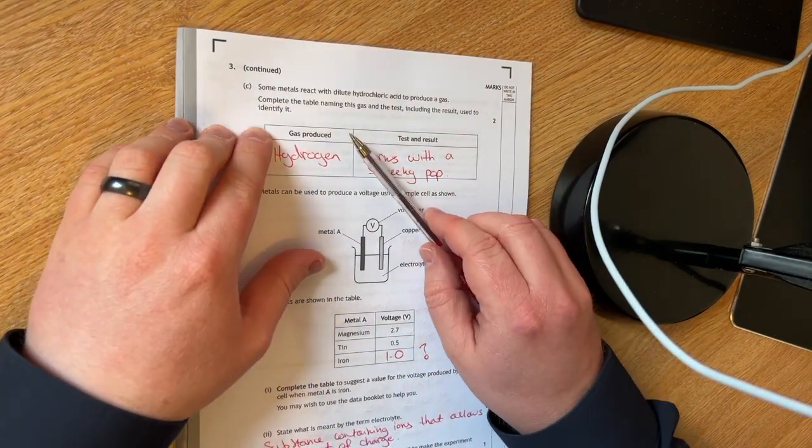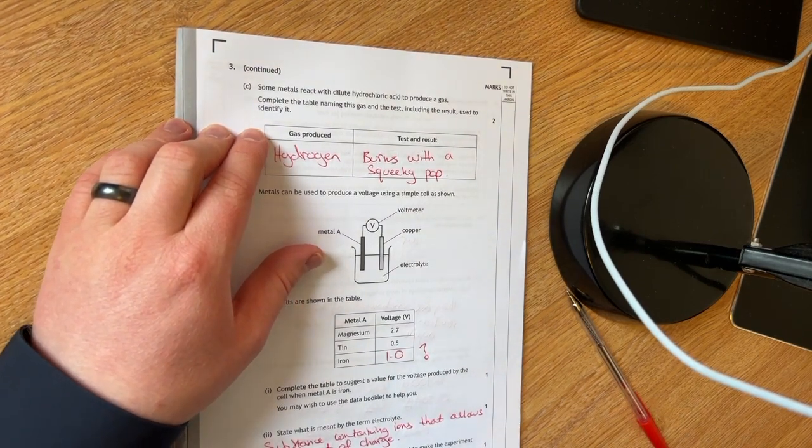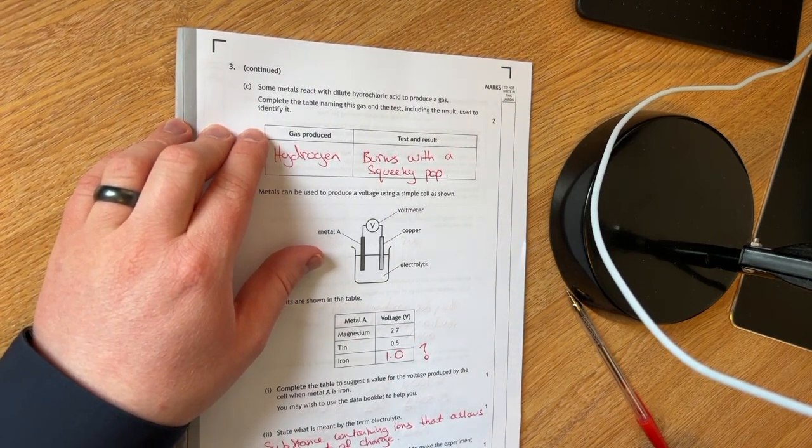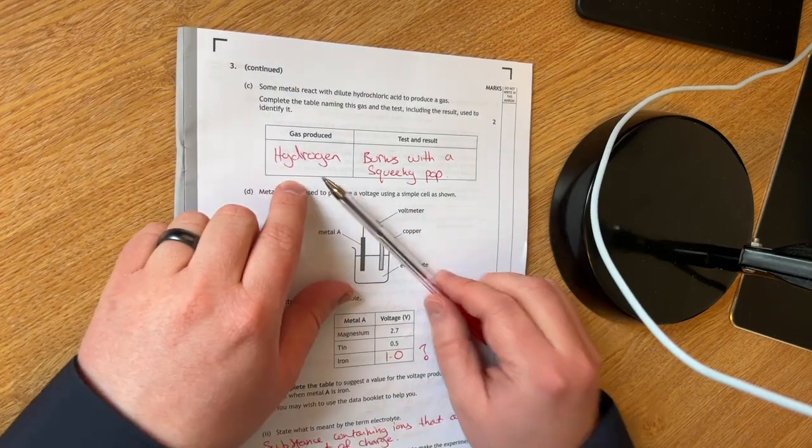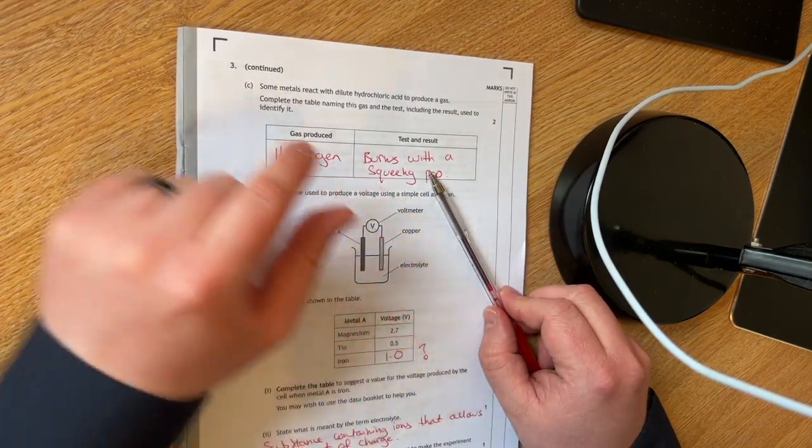3C. You have to complete the table naming the gas that would be produced when dilute hydrochloric acid and some of your metals react. You always get a hydrogen gas. And the test is that it's going to burn with a squeaky pop.